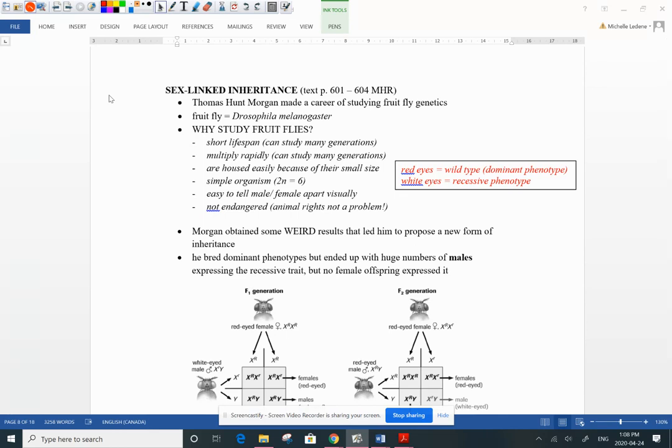Next we're going to talk about sex-linked inheritance. This is a different kind of inheritance than what we've been talking about. The guy who's famous for this is Thomas Hunt Morgan, and he studied fruit flies. You're probably thinking to yourself, who would want to study those god awful fruit flies, Drosophila melanogaster?